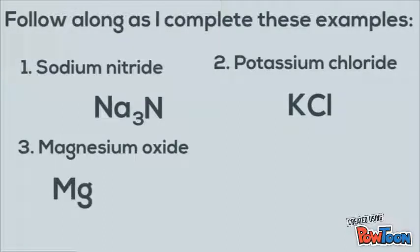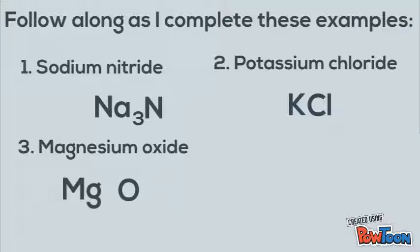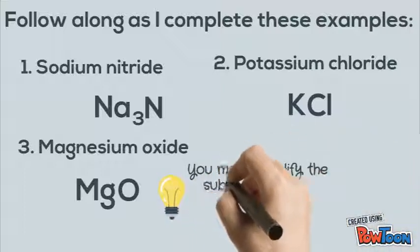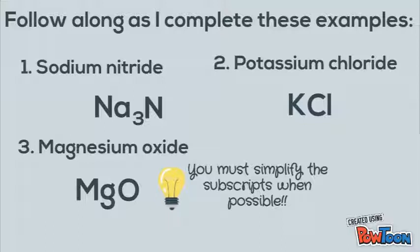For the third example, magnesium oxide: you have Mg and O. Magnesium has a plus two charge and oxygen has a minus two charge. When you cross those and bring them down, you get Mg₂O₂. We take both of those twos out and the answer is MgO, because you always have to simplify the subscripts when possible. So instead of Mg₂O₂, it's MgO.